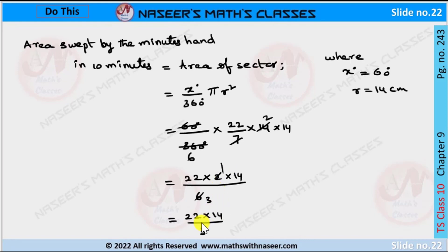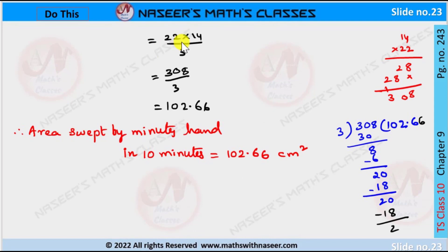After multiplying 22 with 14, we get 308, and we can write it as 308 by 3. Now dividing 308 with 3, we get 102.66.